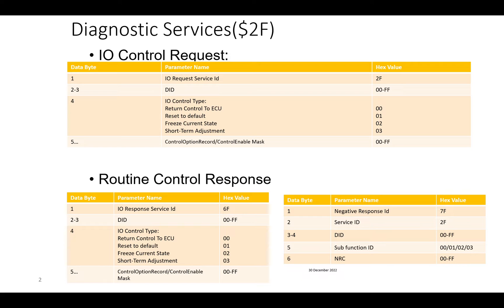Sub-function 0x02 is Freeze Current State — whatever is the current state of the input signal, output signal, or internal parameter, it will be frozen to that value. Sub-function 0x03 is Short-Term Adjustment, where the input/output signal or internal parameter is changed to the value that we provide.